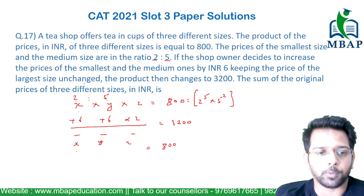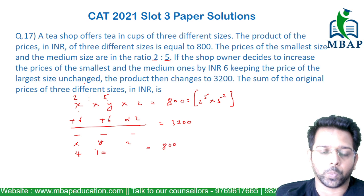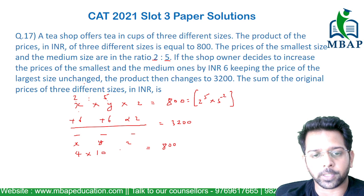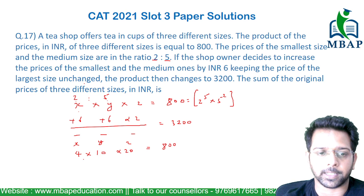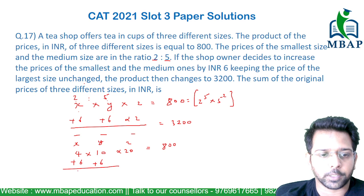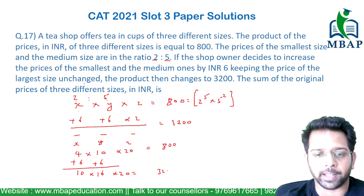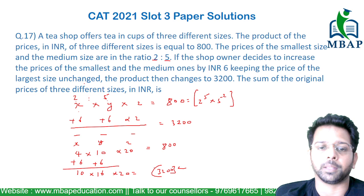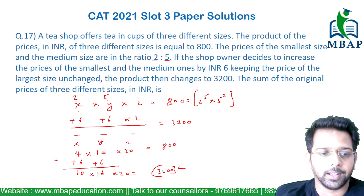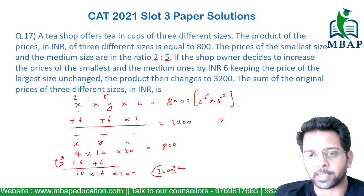The next values I can assume are 4 and 10, which are in the 2 to 5 ratio. So 4 into 10 into 20 gives the value as 800. Adding 6 to each of the first two, the next values become 10 and 16, and z stays 20. 10 into 16 into 20 gives 3200, which is perfectly matching — validation is picture perfect.